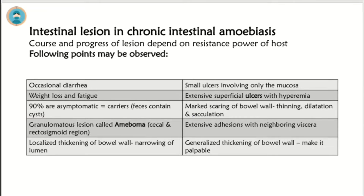90% of cases of chronic intestinal amoebiasis are asymptomatic, but these patients are carriers — meaning their faeces contain cysts. Granulomatous lesions called amoeboma are formed. Localized thickening of the bowel wall causes narrowing of the lumen, while generalized thickening of the bowel wall makes it palpable.